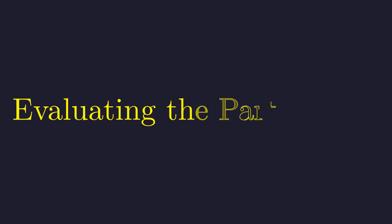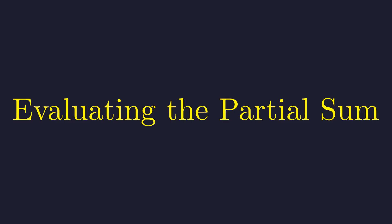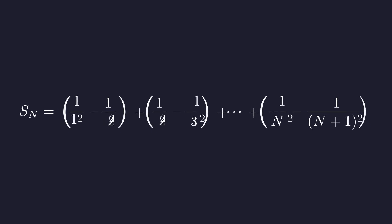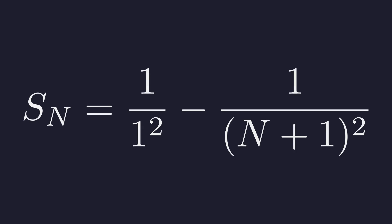To formalize this, let's consider the n-th partial sum, which we'll call S_n. The n-th partial sum contains all terms up to n. As we saw, all the middle terms cancel out perfectly.